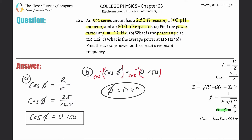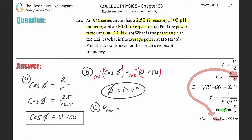Part (c): find the average power. The formula for average power is P_avg = I_rms × V_rms × cos(φ). I'll substitute I_rms = V_rms / Z, so the formula becomes P_avg = V_rms² / Z × cos(φ).